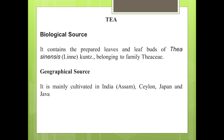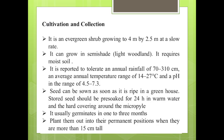Tea is the most important beverage crop of India. It is a shade-loving plant that grows vigorously in shade. The tea leaves are cultivated or planted in between trees which provide shade, and when shade is provided by other trees, the tea plant grows vigorously.